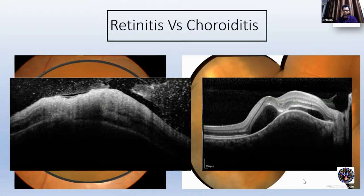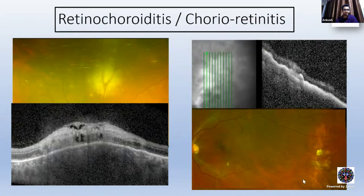There is confusing terminology like retinochoroiditis and choroidoretinitis. When the primary lesion is the retina and the choroid is secondarily involved, it's retinochoroiditis. And vice versa, when the primary lesion is in the choroid and the retina is secondarily involved, it's choroidoretinitis.